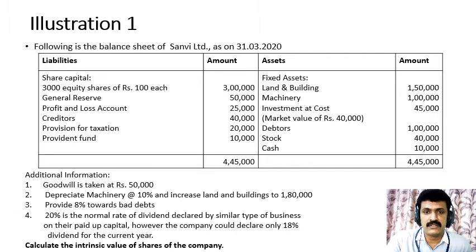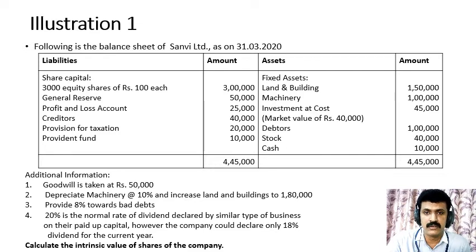Now we will move on to the second problem. The balance sheet of Sanville Limited as on 31st March 2020 is given. On the liability side: only equity shares are present — 3,000 equity shares of ₹100 each = ₹3 lakhs, reserves ₹50,000, P&L account ₹25,000, creditors ₹40,000, provision for taxation ₹20,000, provident fund ₹10,000 — total liabilities ₹4,45,000. On the asset side: land and building ₹1,50,000, machinery ₹1 lakh, investments at cost ₹45,000 (market value ₹40,000), debtors ₹1 lakh, stock ₹40,000, cash ₹10,000.